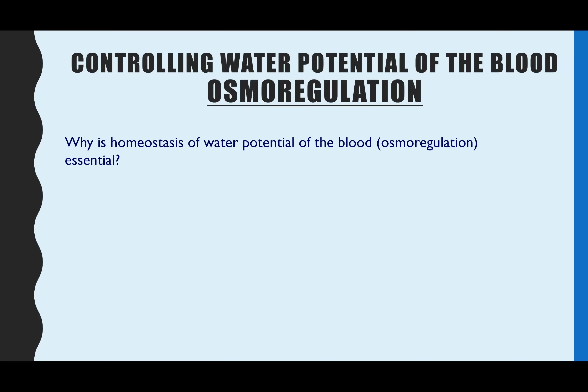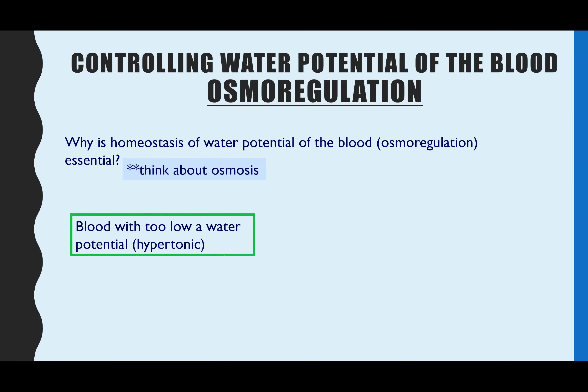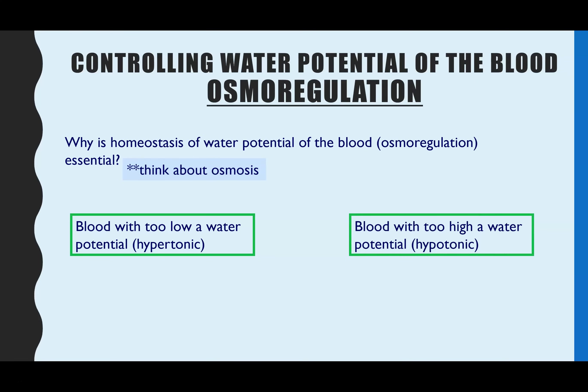Why is it actually important to regulate the water potential of the blood? There are two options for deviation from normal. You could have hypertonic blood, which means the blood has too low a water potential — very little water and lots of ions. Or your blood could be hypotonic, which means too high a water potential — too much water and very few ions.